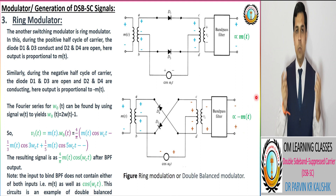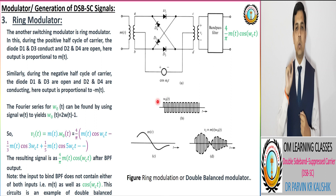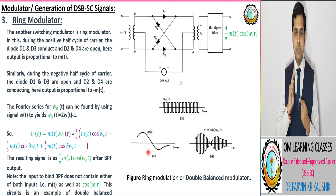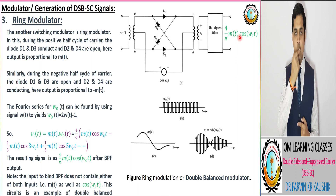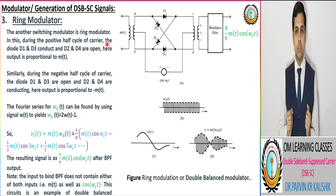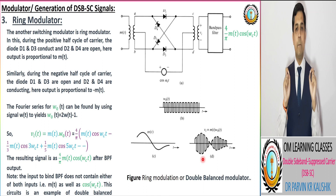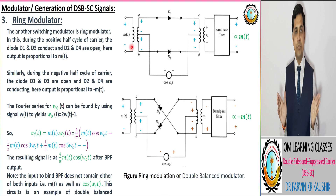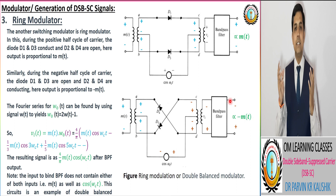By utilizing the periodic signal ω(t) = 2ω(t) − 1 as the carrier wave, this expression is multiplied with respect to the modulating signal corresponding to the diagram of the ring modulator. We get the output equivalent to (1/π)·m(t)·cos(ωC·t) after the band pass filter. In the positive half cycle of the carrier wave, the first diagram is utilized, and in the negative half cycle, the second diagram is utilized.